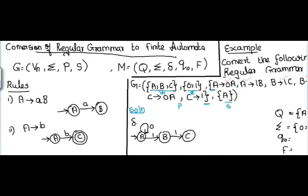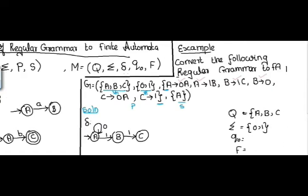Next production is B tends to 0 — after the arrow there is only one small letter terminal. Applying the rule, I introduce one more new state as a final state. I choose the state name D. So: state B with input 0 transitions to the new final state D. D is my final state.